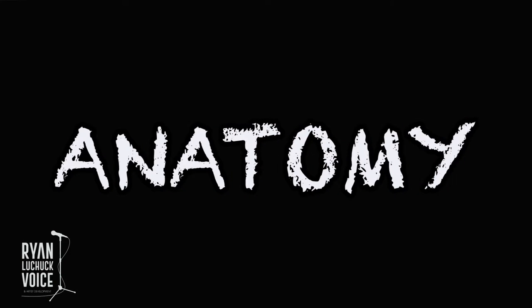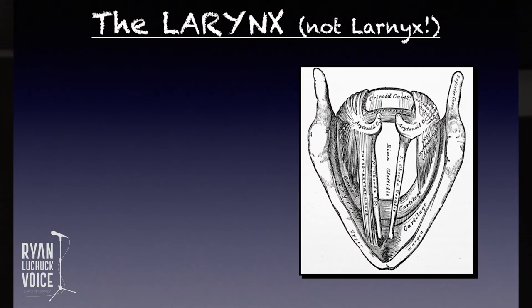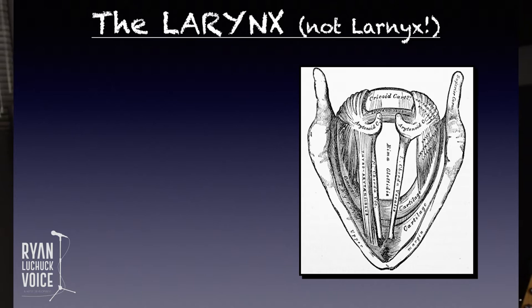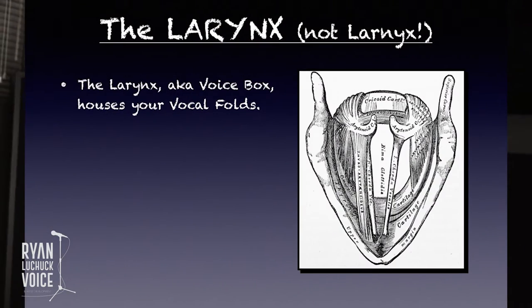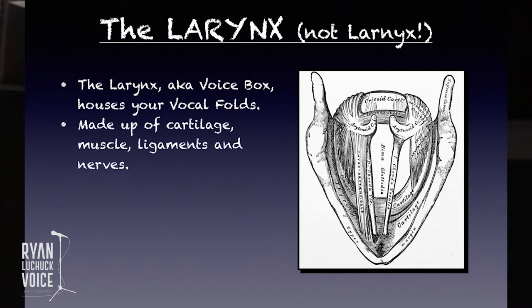Let's look at some basic anatomy. You can go very deep — there are a lot of muscles, ligaments, and cartilage. But we want to focus on a few muscle groups you need to understand. The larynx, also known as the voice box, houses your vocal folds. It's made up of cartilage, muscle, ligaments, and nerves.